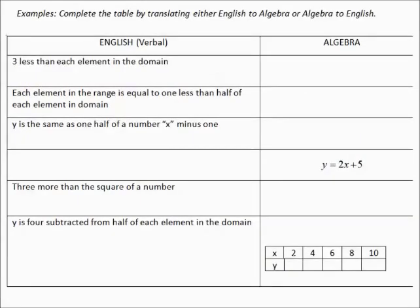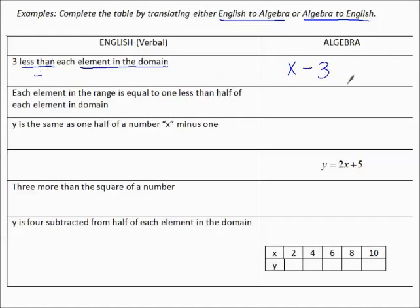Let's try some examples. Complete the table by translating either English to algebra or algebra to English. 'Three less than each element in the domain' — I'm starting with the element in the domain; less than means subtract, and then I'm subtracting three. Maybe you pause the video, try some of these, and come back and check how you did.